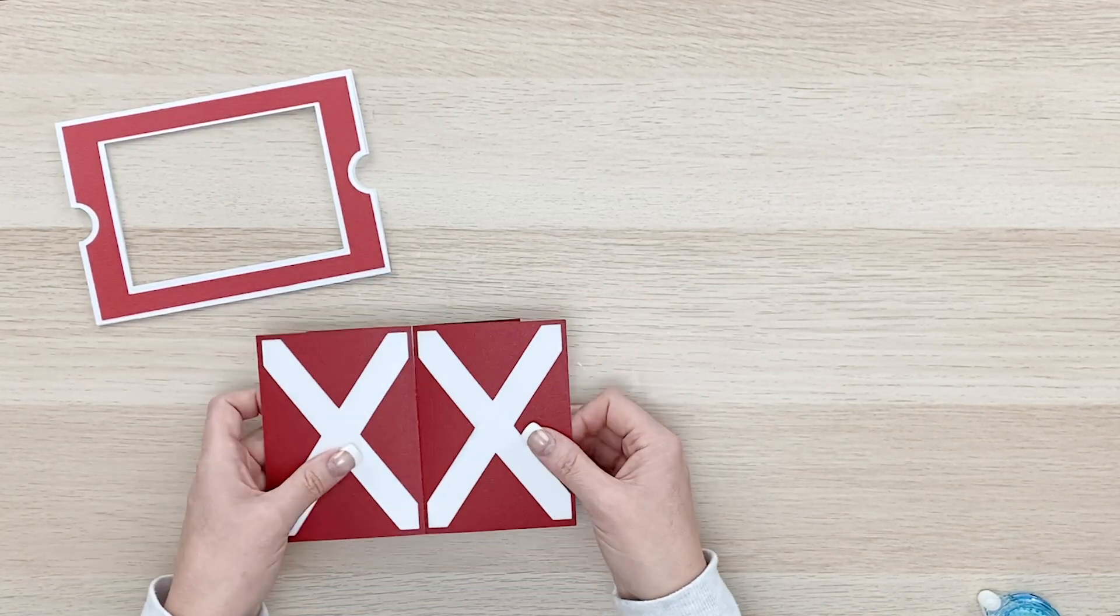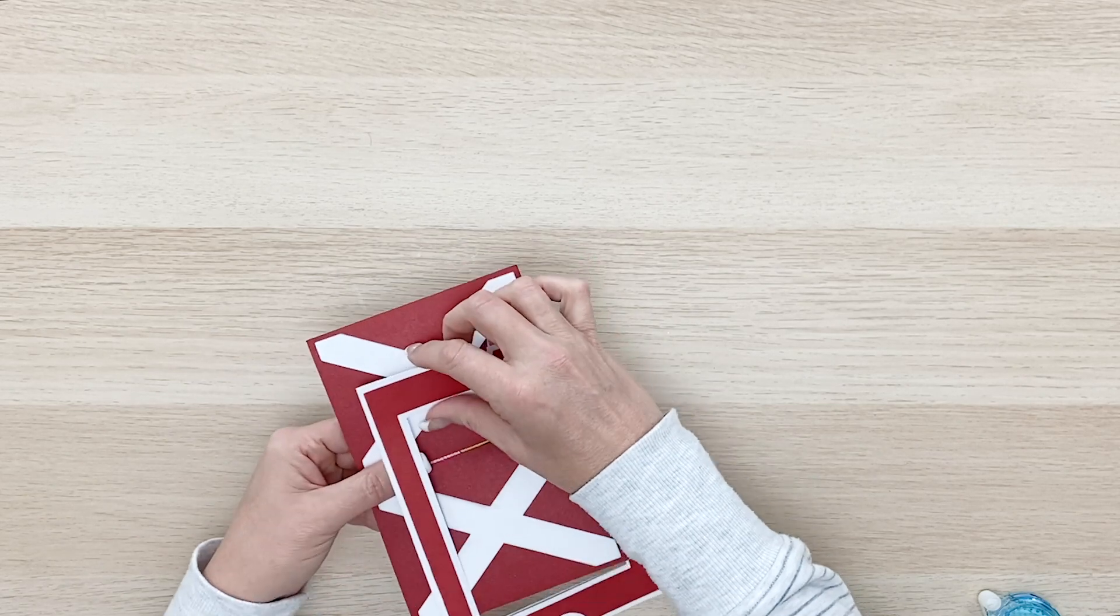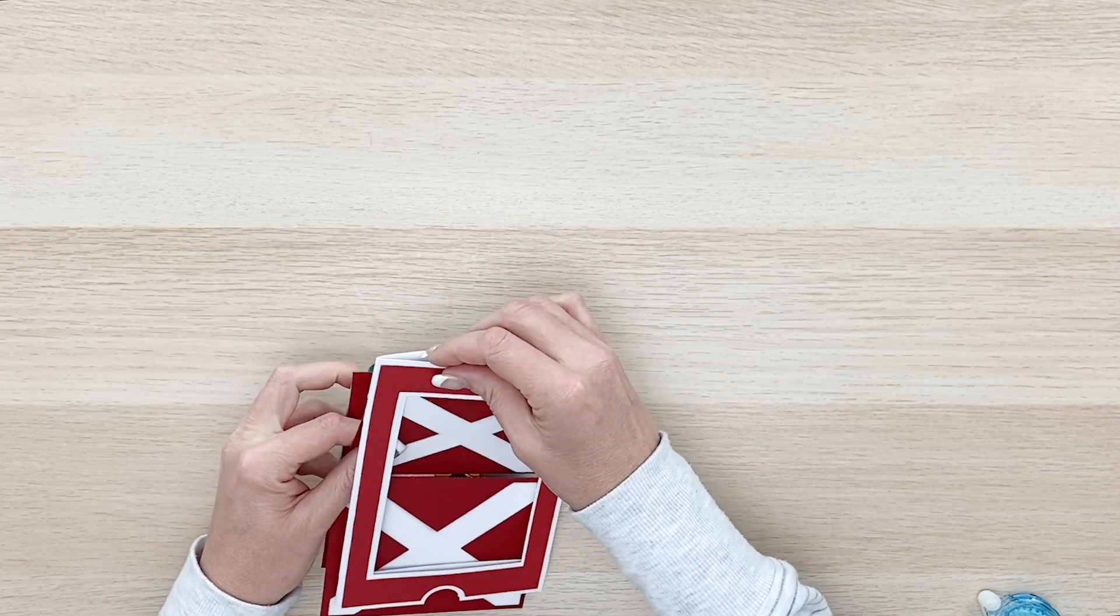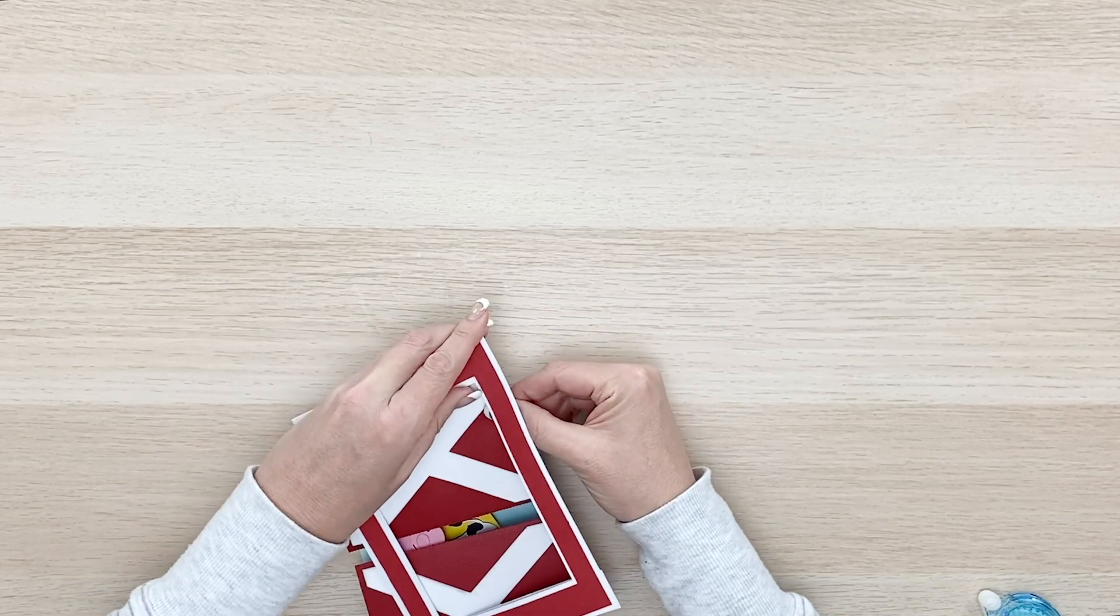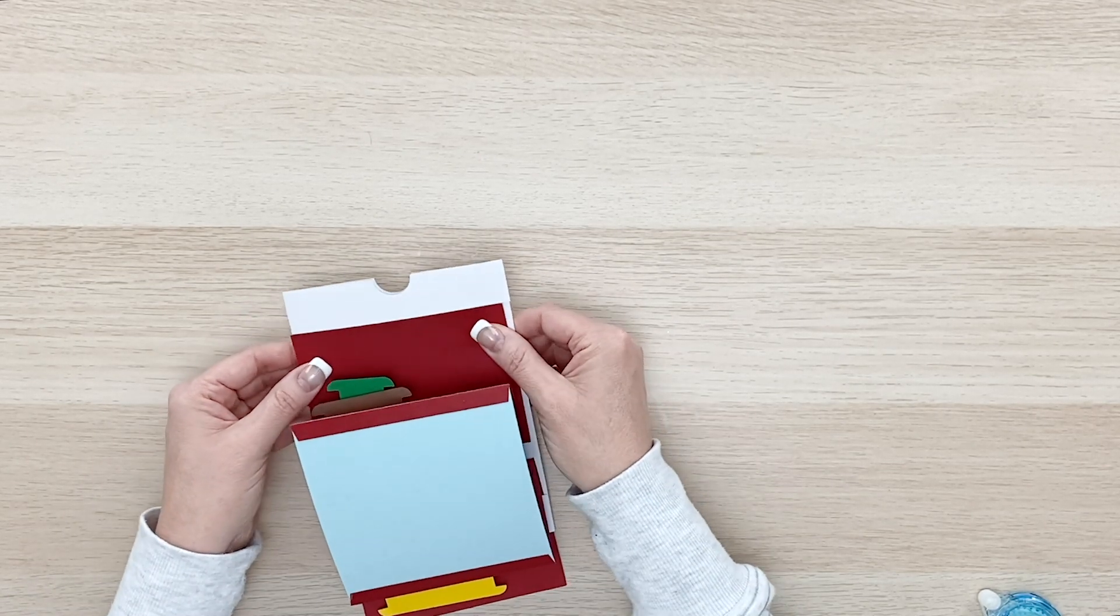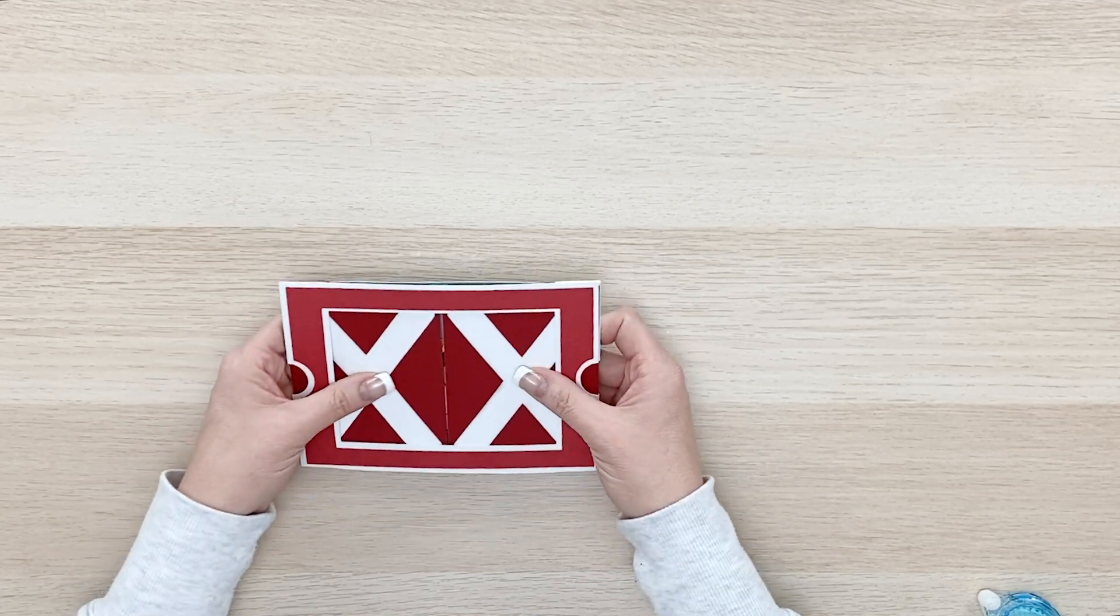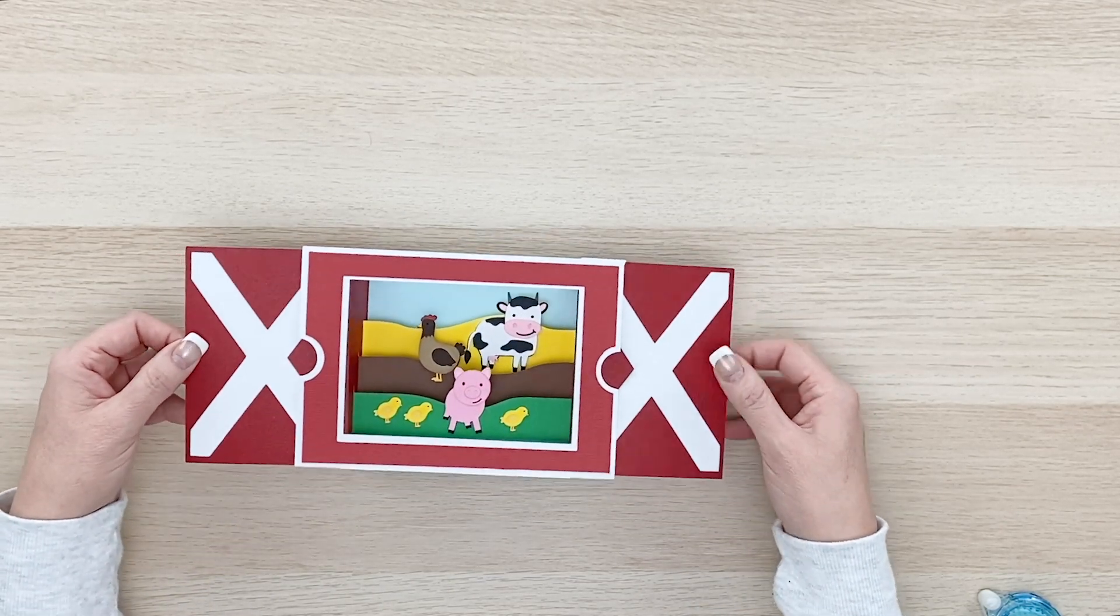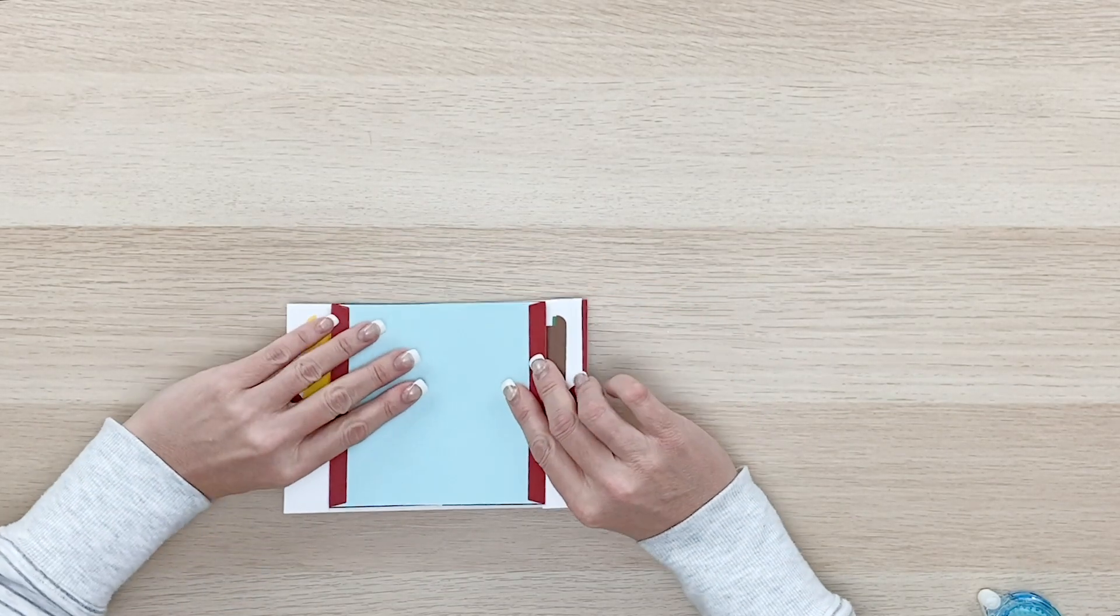And now we can just again put our frame back in place. Just make sure as you're putting that on that you don't get these little tabs hung up with your frame on the front. Okay. So now you can close that card and pull it open and you'll see your cute little barn scene. And you can embellish a little bit more. It'd be cute with some clouds back there or some cloud pattern paper would be darling.